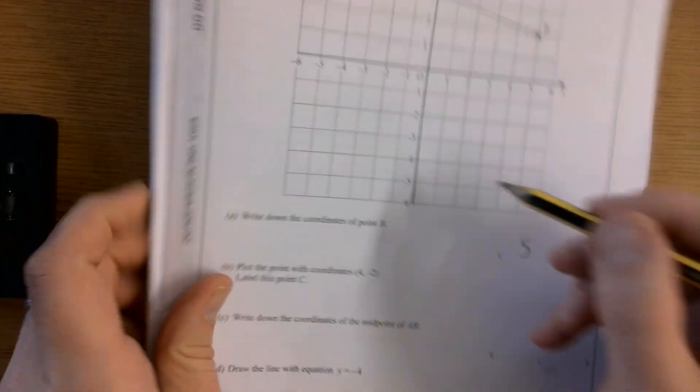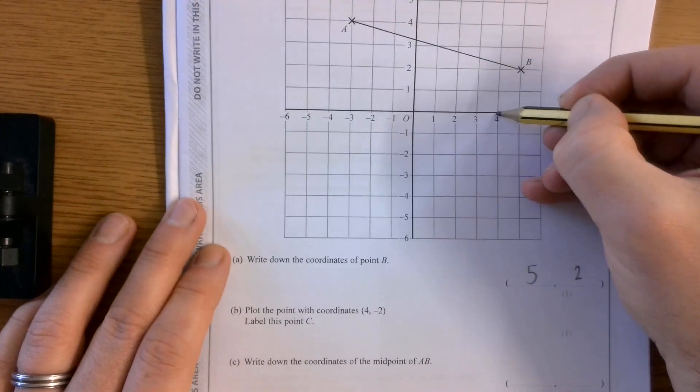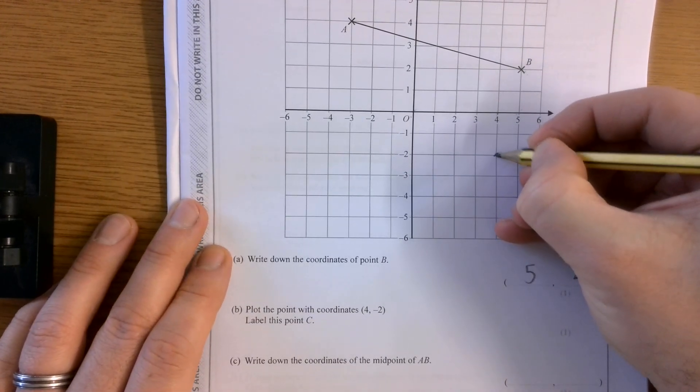Plot the point with coordinate 4, negative 2. So again, I'm going to start at the origin. I'm going to go 1, 2, 3, 4 to the right and 2 down. And that will get me to point C.